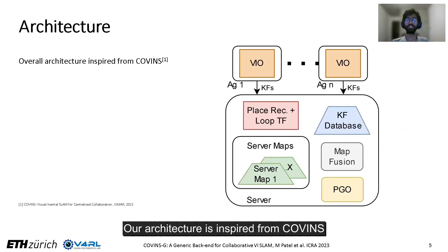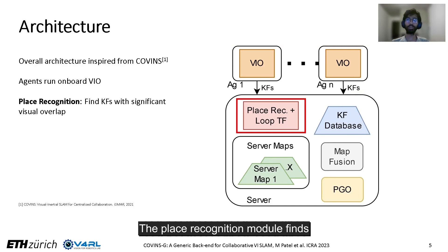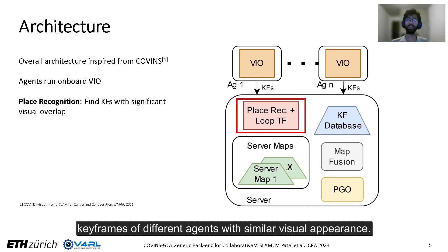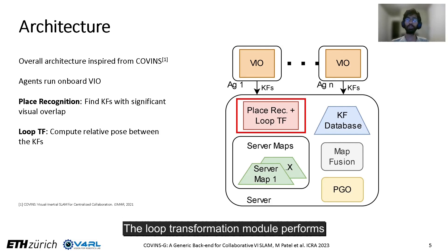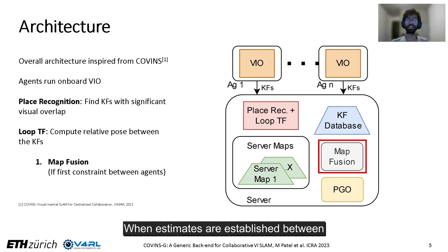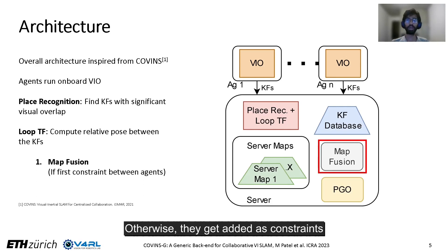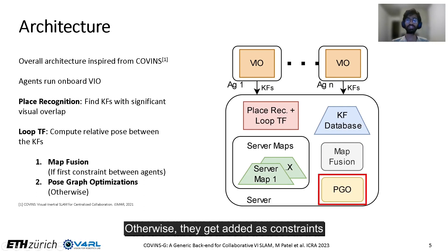Our architecture is inspired by Covins. The agents run an onboard VIO and send the keyframe information to the backend. The place recognition module finds keyframes of different agents with similar visual appearance. The loop transformation module performs geometric verification and computes the relative pose between these keyframes. When estimates are established between different agents for the first time, it is followed by map fusion; otherwise they get added as constraints to the pose graph followed by optimization.